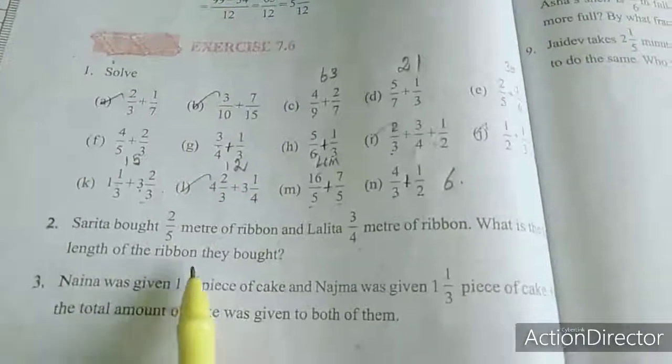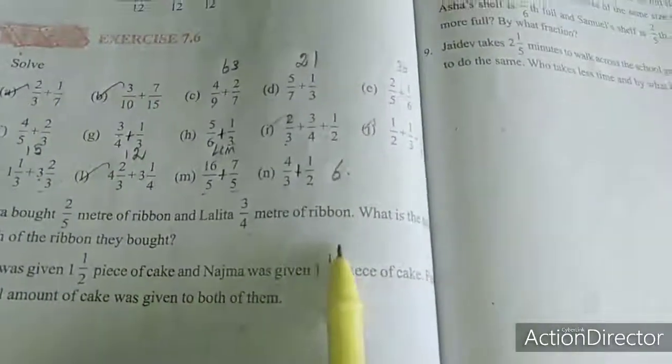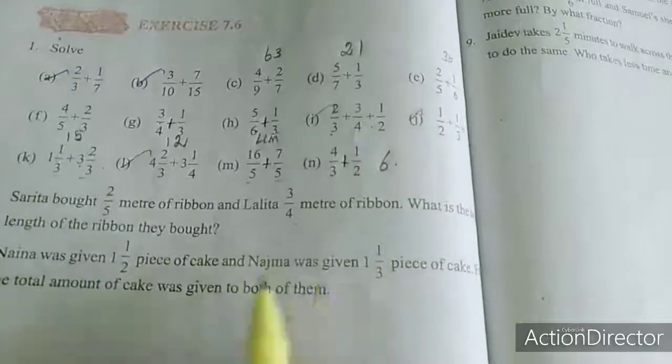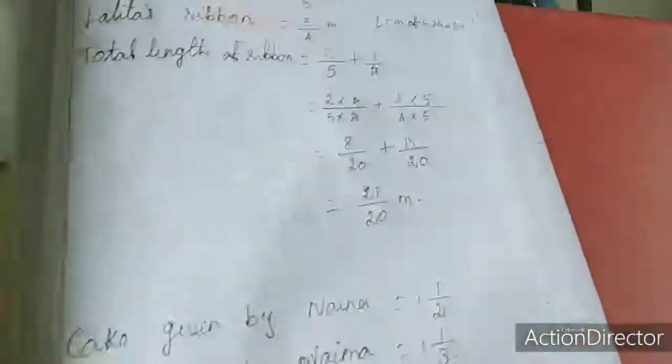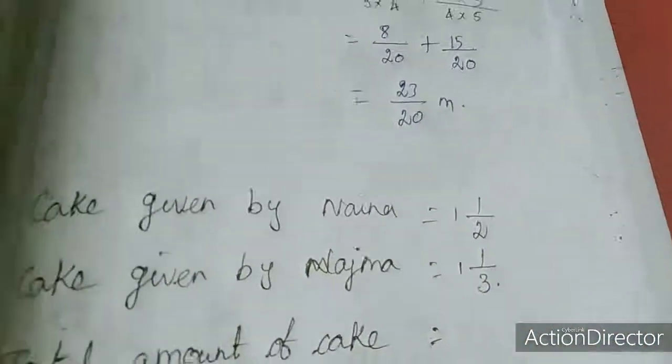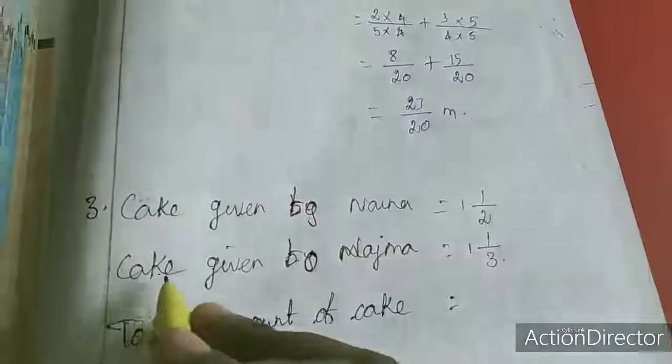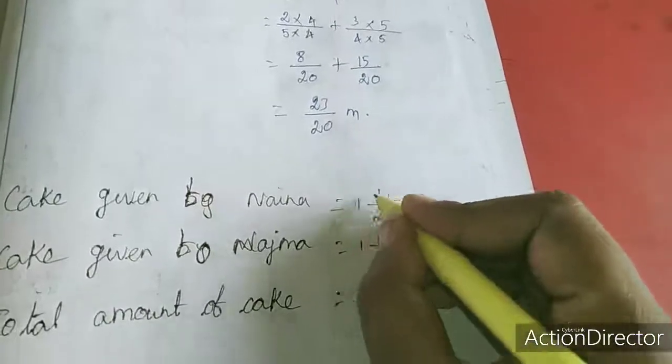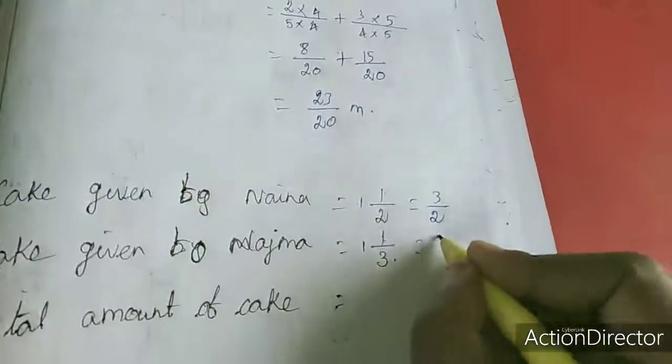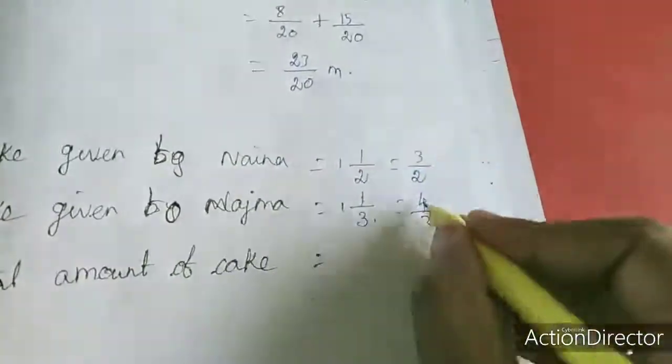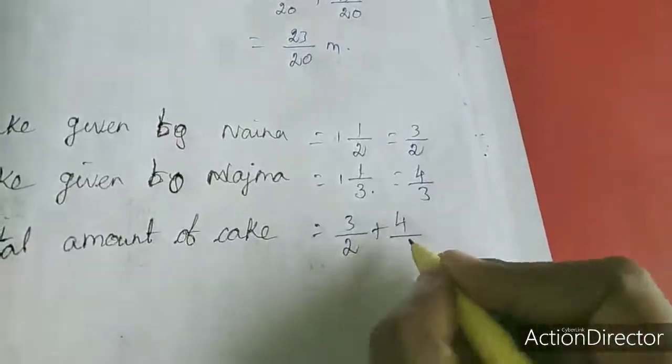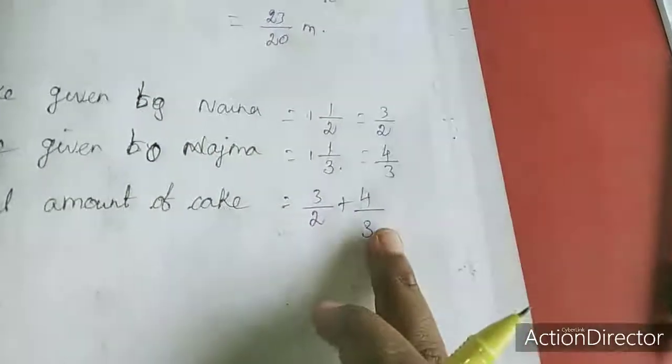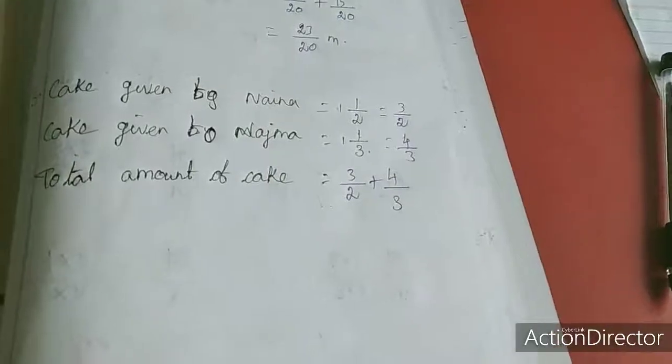Now we will move to the third sum. Naina was given 1 and 1 by 2 piece of cake and Najma was given 1 and 1 by 3 piece of cake. Find the total amount of cake was given to both of them. Total amount of cake, so we have to add this 2. Cake given to Naina is 1 and 1 by 2, given to Najma is 1 and 1 by 3. So here I am going to change this mixed fraction as improper. 2 plus 1 is 3, so 3 by 2. Here 3 plus 1 is 4, 4 by 3. Total amount of cake means we have to add this 2 fraction, so 3 by 2 plus 4 by 3. This is the homework for you. After this you have to continue, find the LCM and equalize the denomination and add the numerator. This is the homework for you.